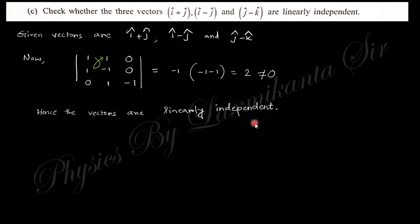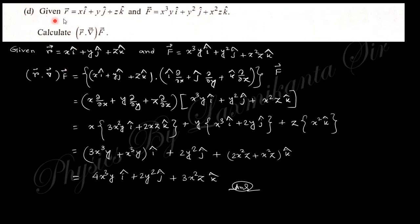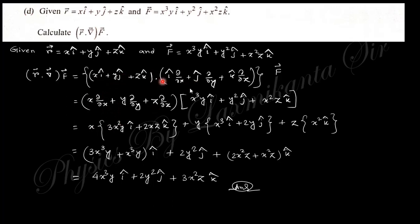The next question: given r vector and f vector, find (r·∇) operating on f vector. Here r = x î + y ĵ + z k̂ and ∇ = î(∂/∂x) + ĵ(∂/∂y) + k̂(∂/∂z). Taking the dot product gives the operator x(∂/∂x) + y(∂/∂y) + z(∂/∂z) acting on f vector.